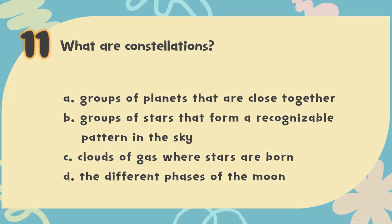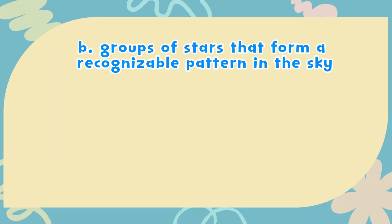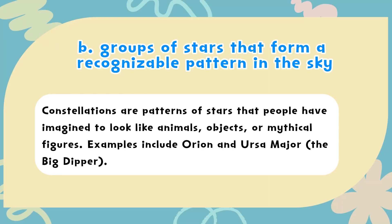The correct answer is B: Groups of stars that form a recognizable pattern in the sky. Constellations are patterns of stars that people have imagined to look like animals, objects, or mythical figures. Examples include Orion and Ursa Major, the Big Dipper.